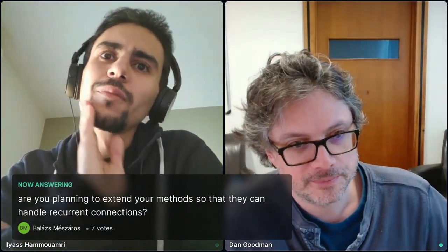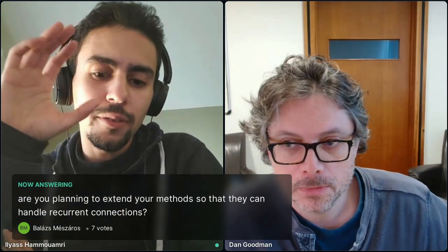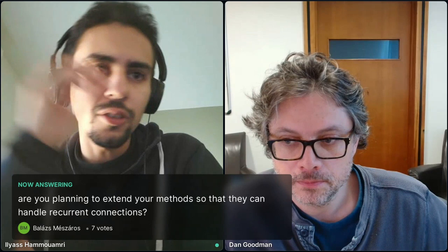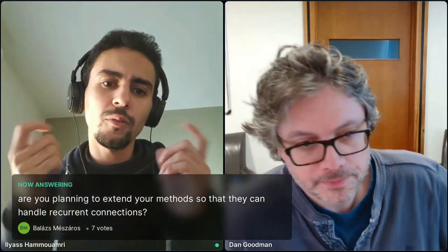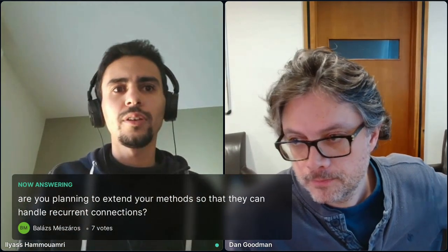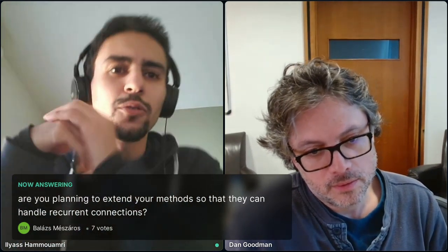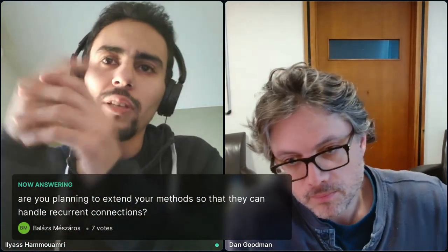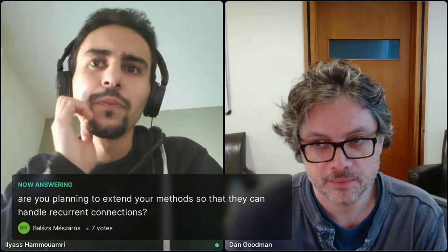Okay. So there's a question. Are you planning to extend your methods so that they can handle recurrent connections? I'm not sure we can do that right now with the same method because the modernization that we did by modeling delays as convolutions was done on the assumption that it's a feedforward network. So if we add recurrent connections, it won't work the same with it. So methods should change completely. We are mostly wanting to try it on convolutions or something like that. Okay. So it's convolutions first. Yeah. The convolutions are feedforward as well. So it's easy. Yep.